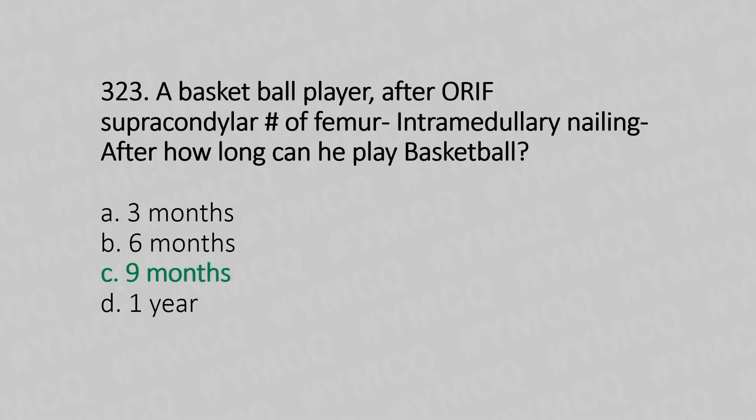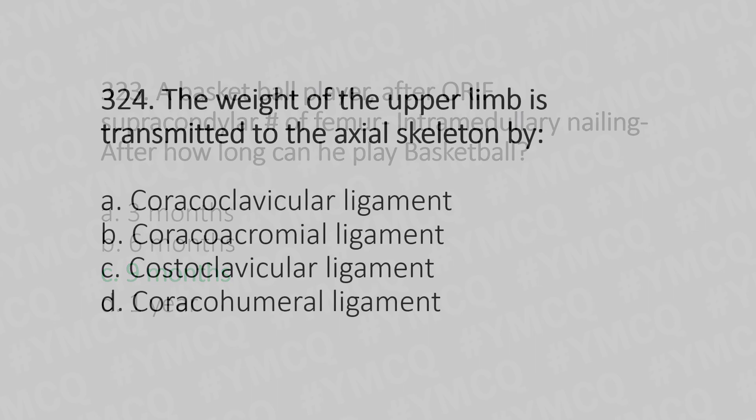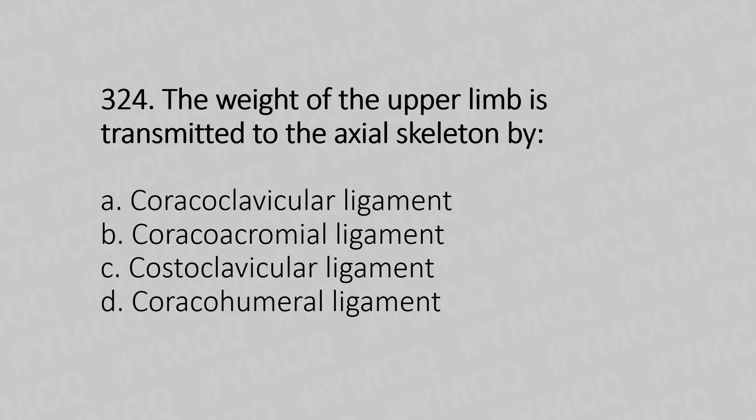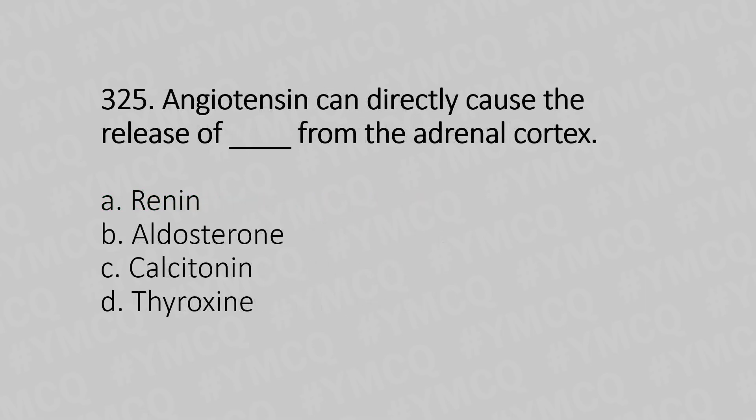Question number 324: The weight of the upper limb is transmitted to the axial skeleton by which structure? Option A: coracoclavicular ligament. Option B: coracoacromial ligament. Option C: costoclavicular ligament. Option D: coracocoracoid ligament. The answer is option A, coracoclavicular ligament.